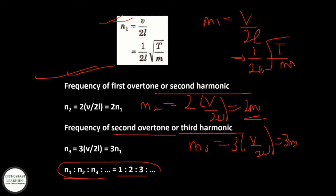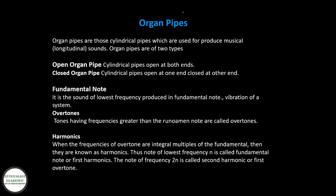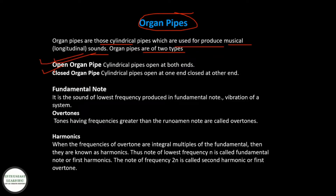Organ pipes are cylindrical pipes used for producing musical sounds. There are two types: open organ pipes, which are open at both ends, and closed organ pipes, which are open at one end and closed at the other.